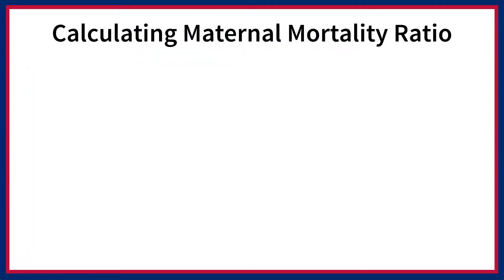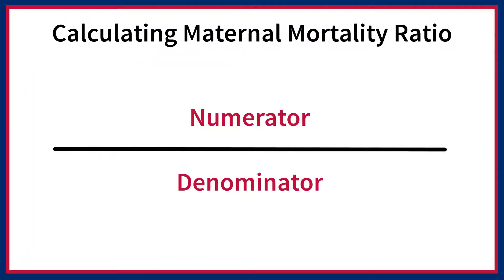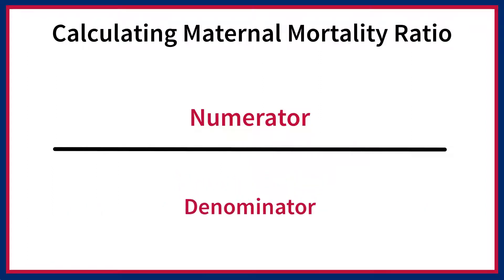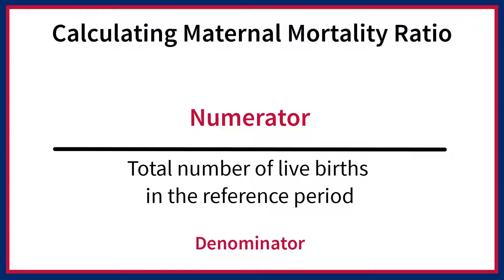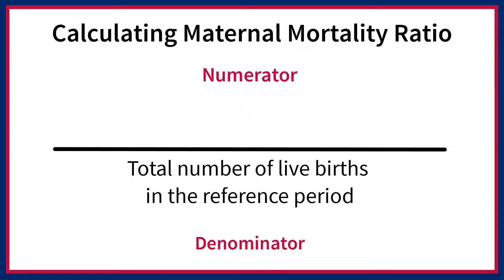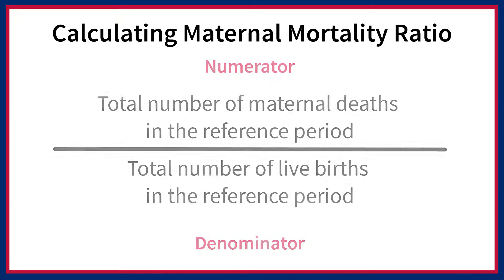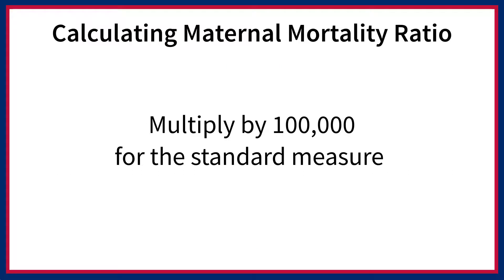Remember that the MMR is a ratio, meaning the denominator does not include the numerator. In the simplest terms, the denominator of the MMR is the total number of live births in the reference period, and the numerator is the number of maternal deaths in the same reference period. The result is then multiplied by 100,000 for the standard measure, because the numerator is much smaller than the denominator.